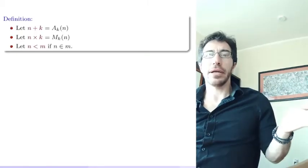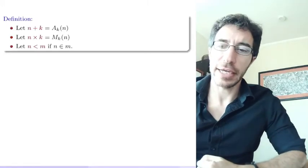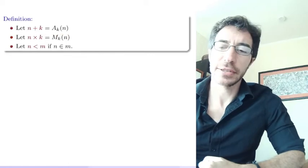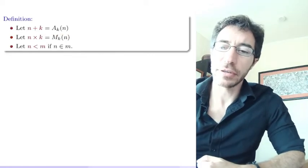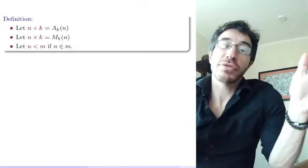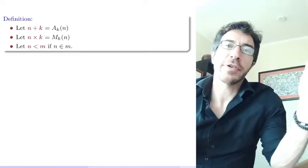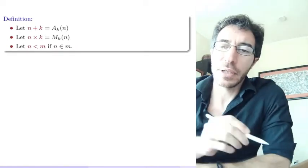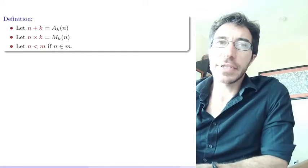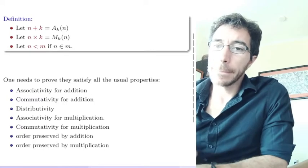So we define addition. That's a sub k. We define multiplication and we know they exist. We can also define order. A number is less than another if it belongs to it. Because remember, because of the way we define the numbers, each one is a set of the previous ones. So this just works. So that defines arithmetic. So this gives us the natural numbers.